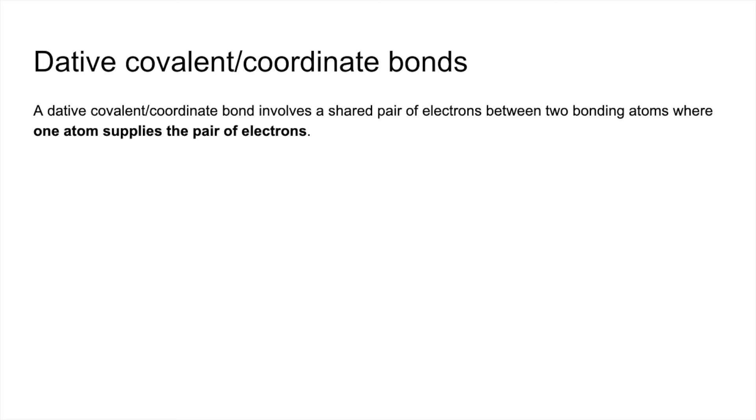So far we've seen both of the bonded atoms contributing electrons to the shared pair or the shared multiple pairs, whereas now it's just a single atom that's providing the electrons for the shared pair.